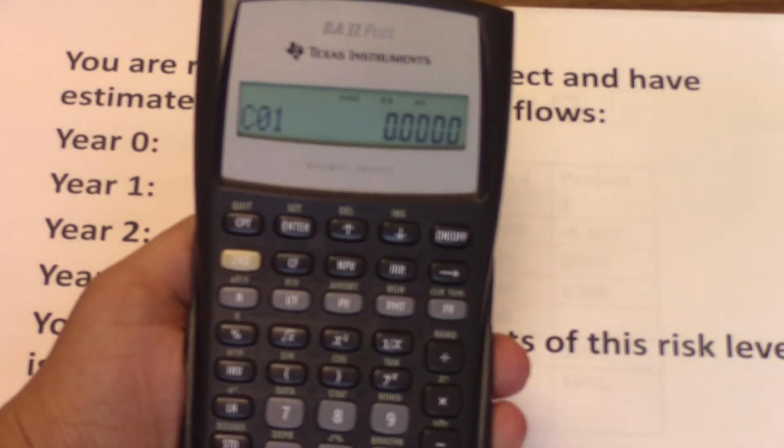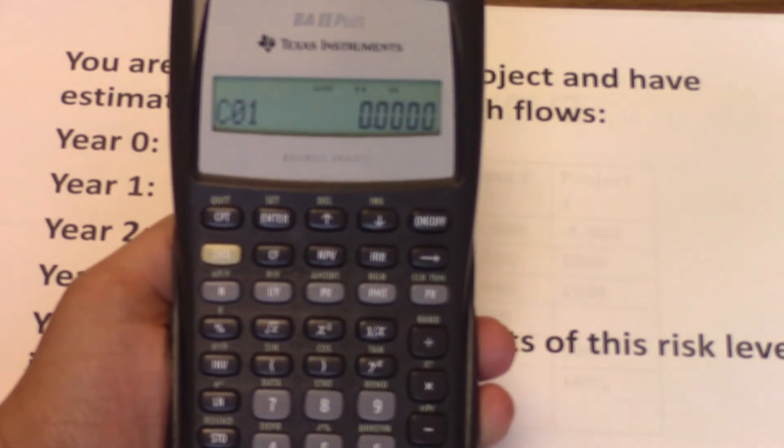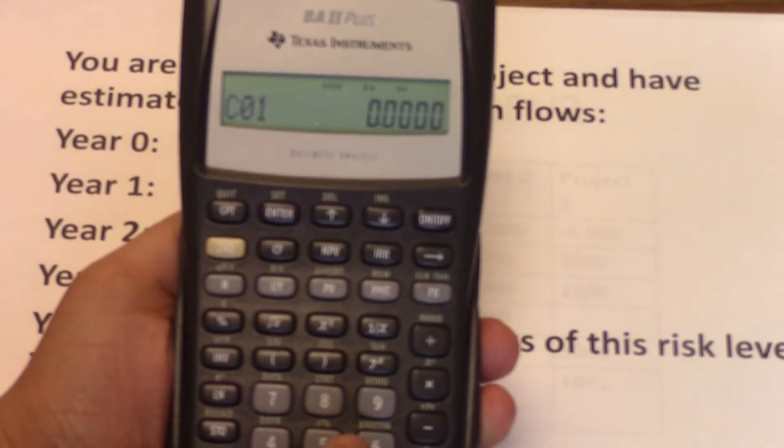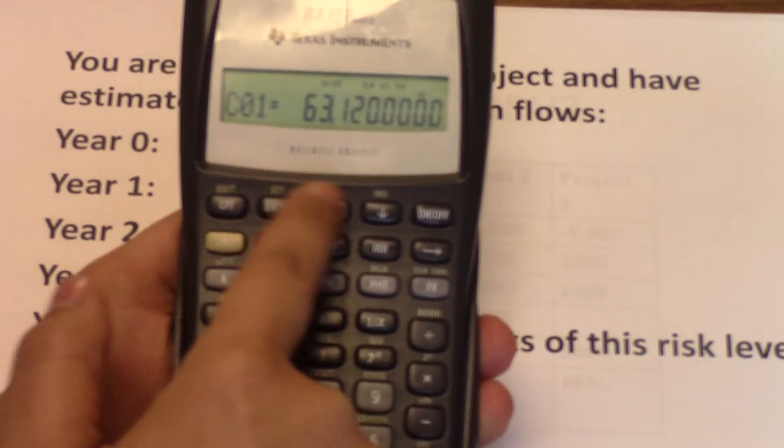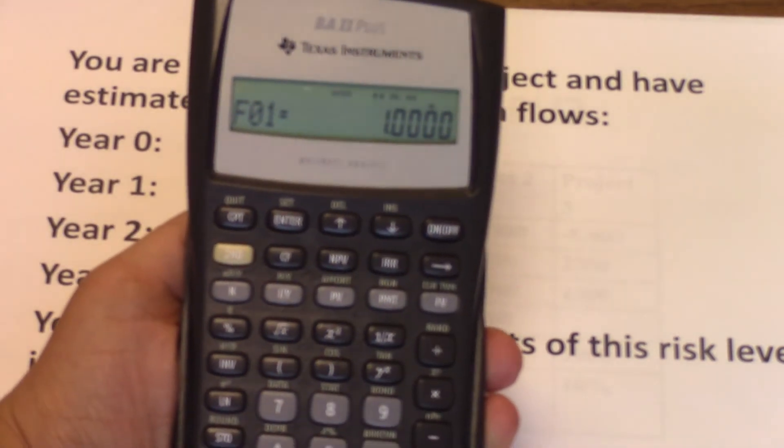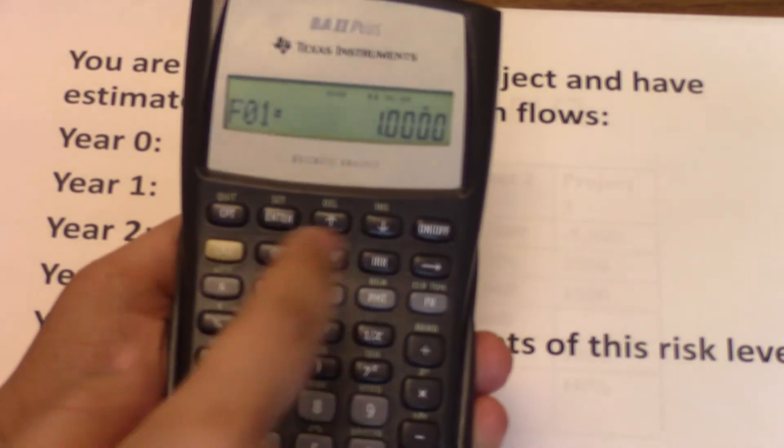You're going to be asked for the cash flow year one. Cash flow year one is $63,120. So $63,120. Then enter, down arrow. You're asked for the frequency of the payment. We keep it at one, so we're good.